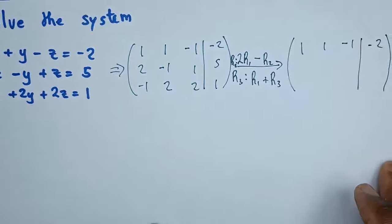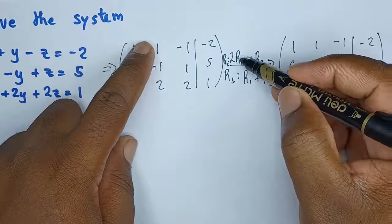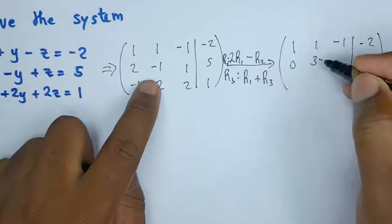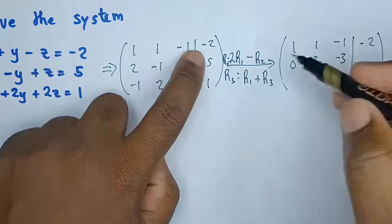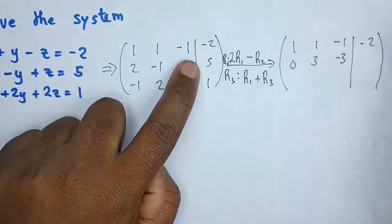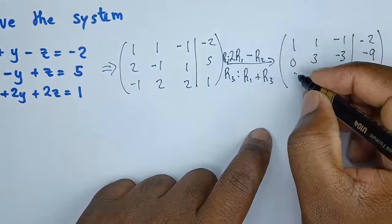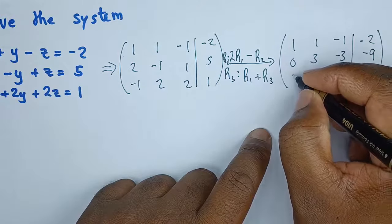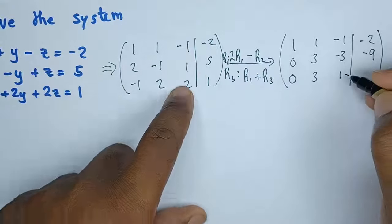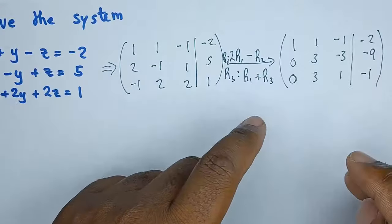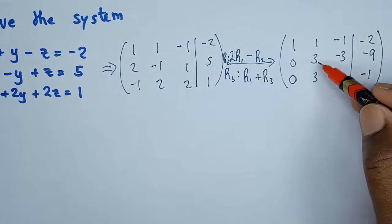Applying the operation on row 2: 2 times row 1 gives a 0 in the first position; 2 times 1 minus 1 gives 3 for y; negative 2 minus 1 gives negative 3 for z; and 2 times negative 2 minus 5 gives negative 9 on the right-hand side. Now for row 3, adding row 1 and row 3: 1 and negative 1 give a 0 in the first position; the y values give 3; the z values give 1; and the right-hand side values give negative 1. We've now achieved a 0 in row 2 and a 0 in row 3 for the first column.